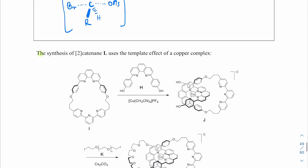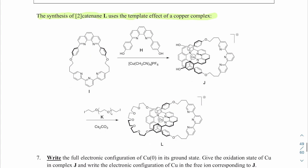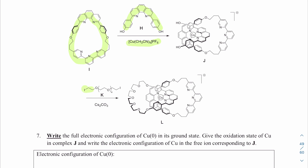The synthesis of two-catenane L uses the template effect of a copper complex. We have one component reacted with another and the copper complex to form J, part of our molecule. Then J reacts with a polyethylene oxide-like iodide oligomer and cesium carbonate as a base to form L, which is the complex we want.